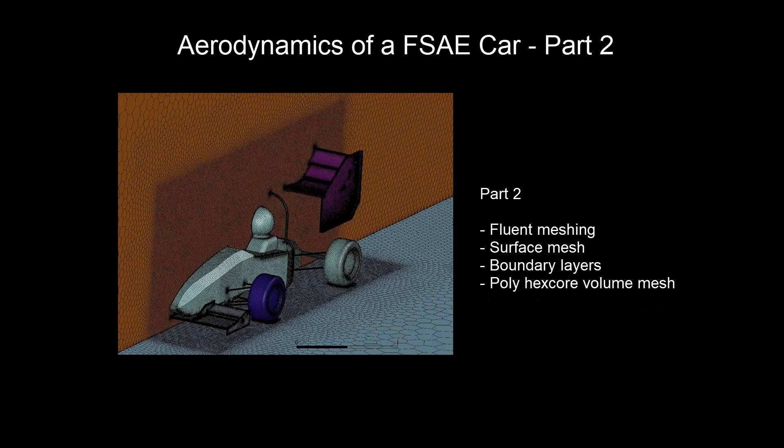In Part 2, we will learn to mesh the car using Fluent Meshing. First, we will create a surface mesh on the car. Then we will create boundary layers around the car. And finally, we will learn to create a polyhex core volume mesh.